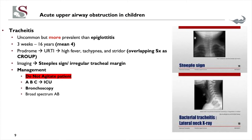Bacterial tracheitis is actually more common than epiglottitis, but the referral we always have is an epiglottitis patient, so we have to start thinking about tracheitis. It presents between ages of 3 weeks to about 16 years, but is more common in those under 5 years — around 4 years of age. They have a similar history to croup but will never respond to treatment. If you do a chest X-ray they've got what we call a steeple sign, and on a lateral X-ray you'll see irregularity in the air trachea — indicating bacterial tracheitis.